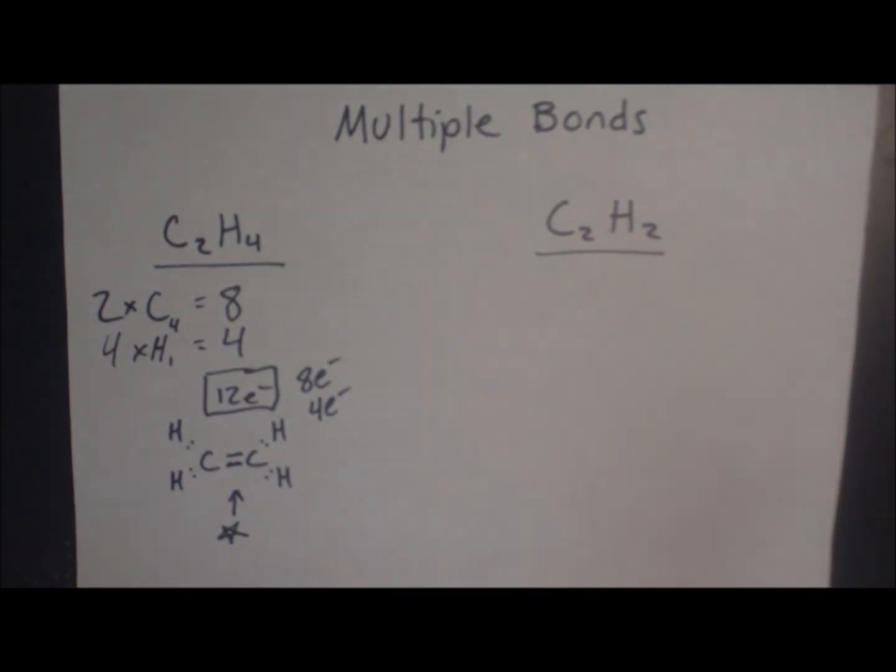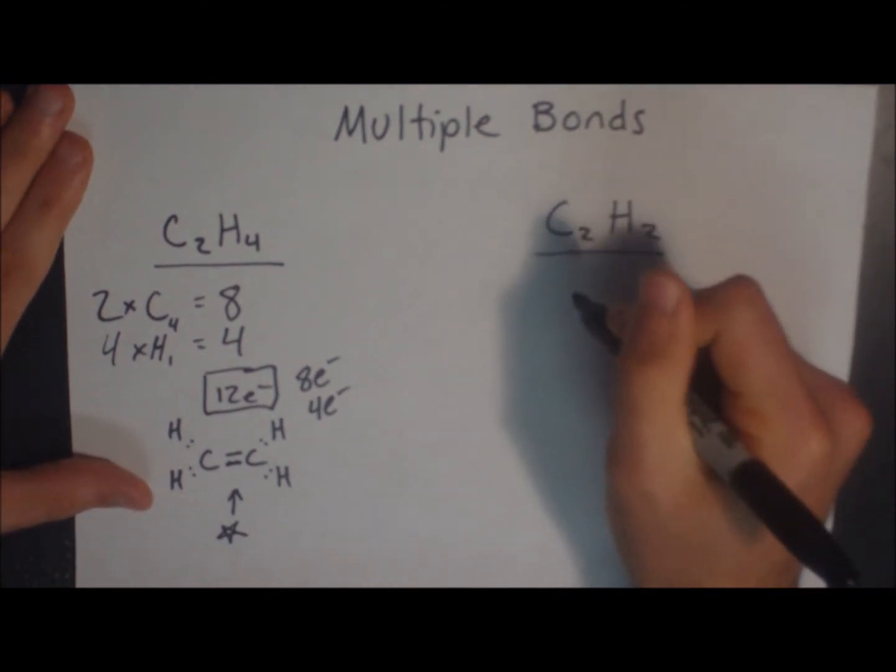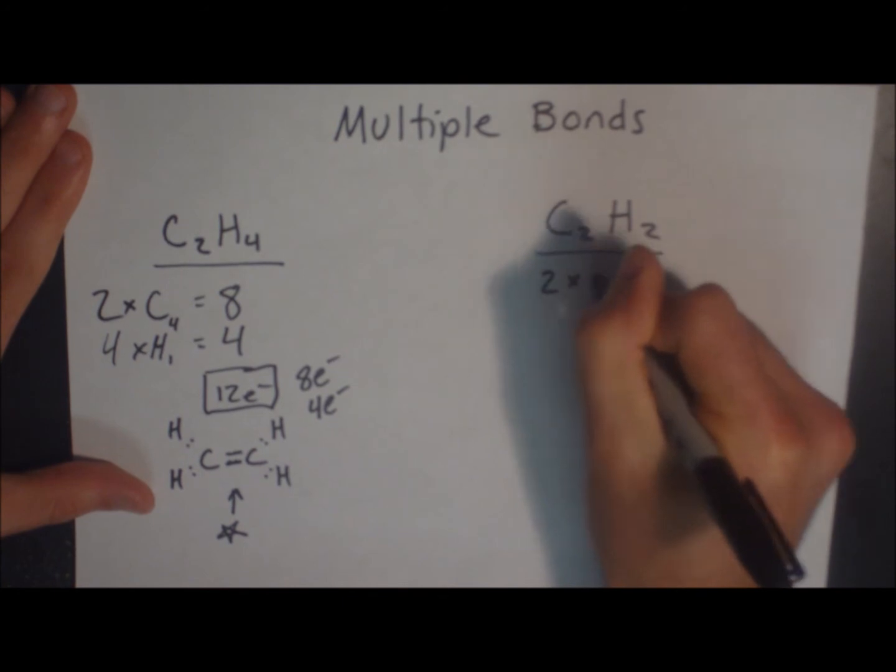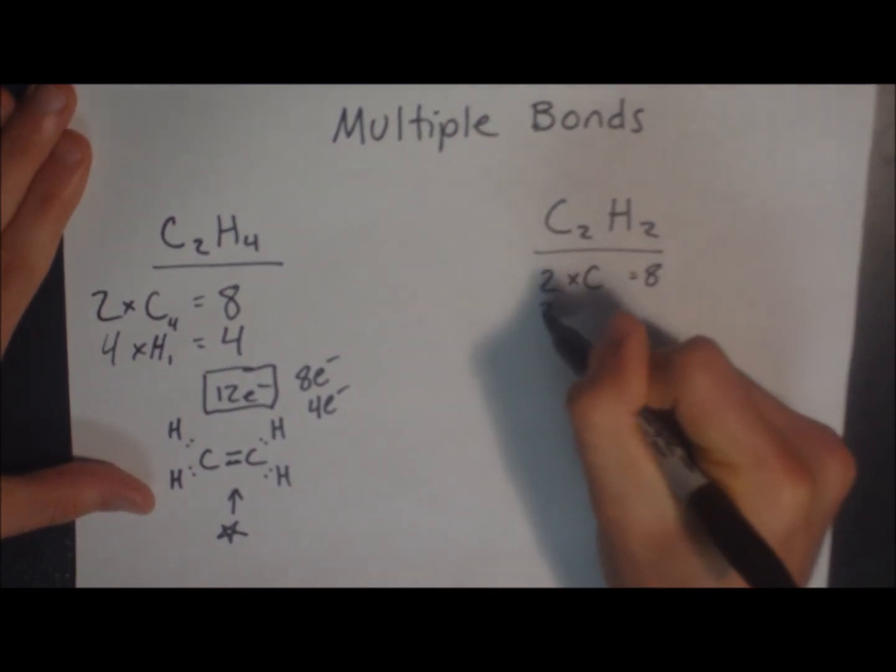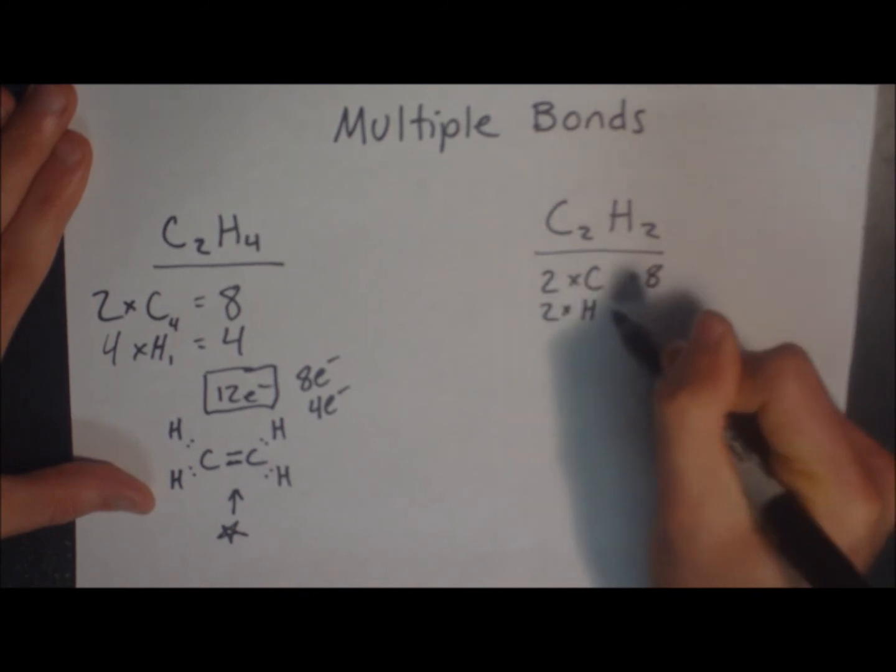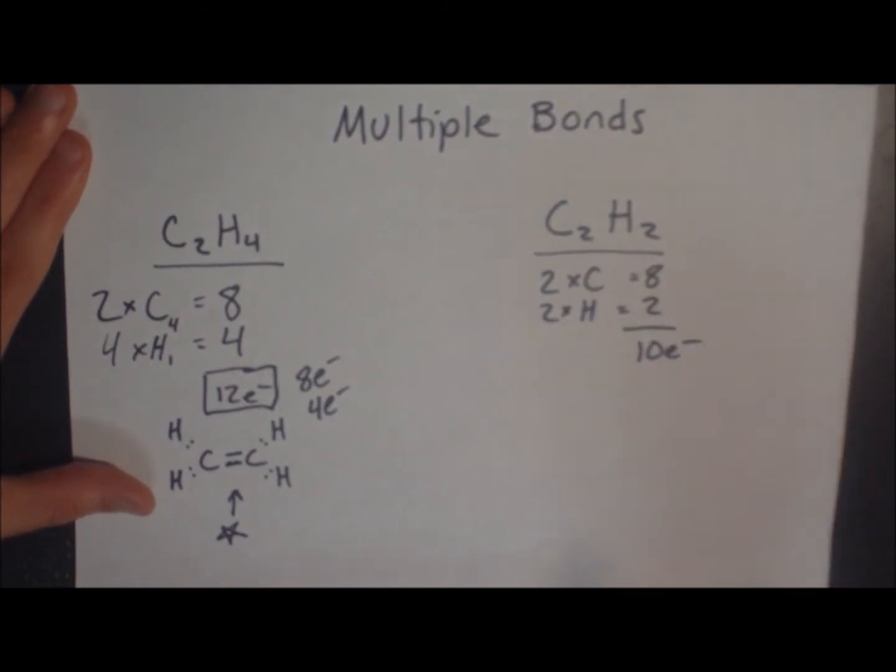Now let's look at another example. It looks pretty similar, but this time we're going to add one more multiple bond. 2 carbons, 8 electrons. 2 hydrogens, only 2. Giving us a total of 10 electrons.